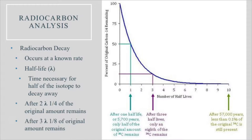The dating of radiocarbon samples is predicated on the fact that it decays at a known, steady rate. A half-life is the time necessary for half of the content of that atom to decay away. So after two half-lives, you get a quarter of the original amount; after three, you get an eighth. By the time you get to 57,000 years, you have less than 0.1% of the original C-14 remaining in your sample. This is where the detection limit comes in — past that amount, we can't accurately measure the amount of carbon-14 with current technology.